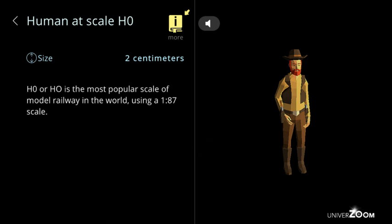Human at scale H0, size: 2 centimeters. H0 or HO is the most popular scale of model railway in the world, using a 1:87 scale.